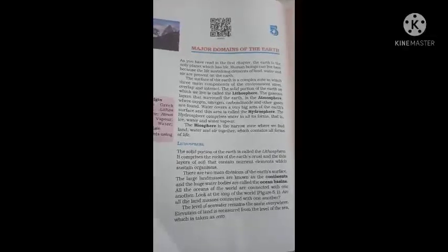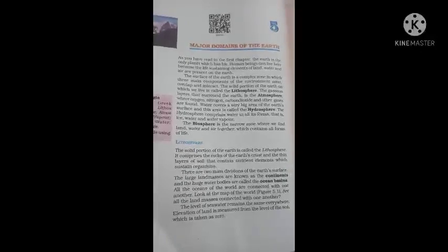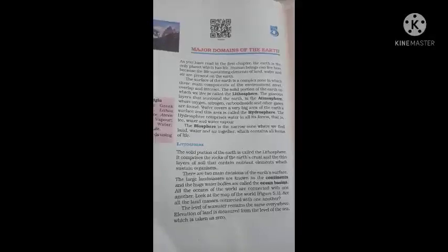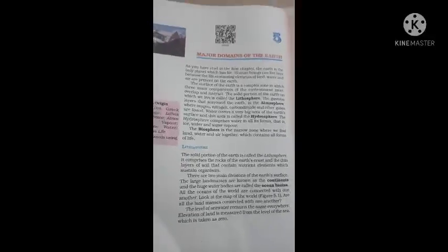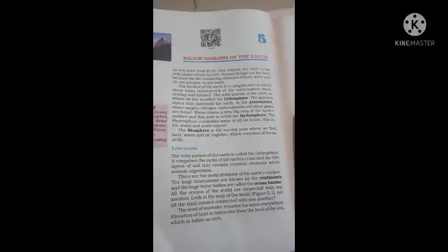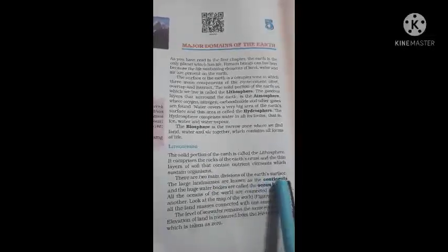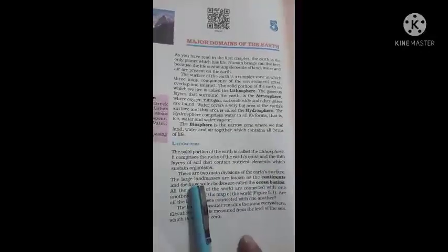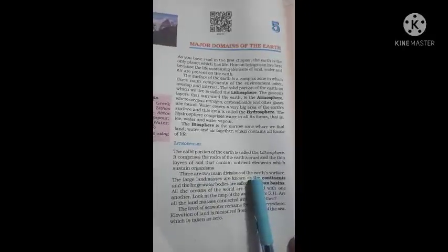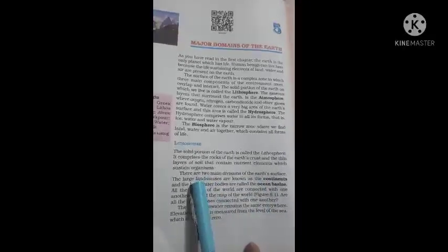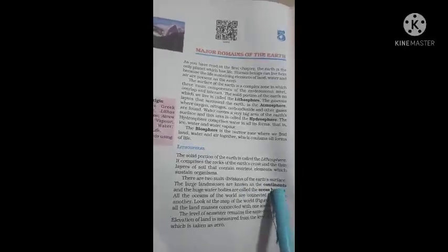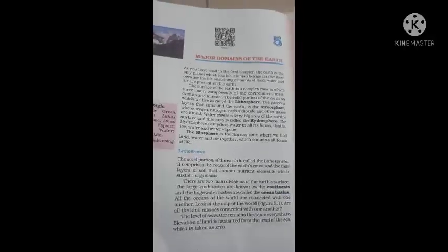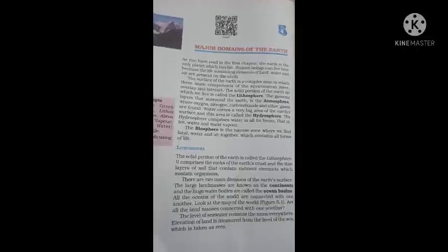There are two main divisions of the earth's surface. Large landmasses are known as continents, and the huge water bodies are called ocean basins. The big water bodies are called oceans.